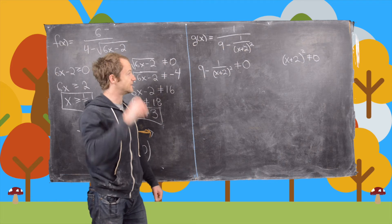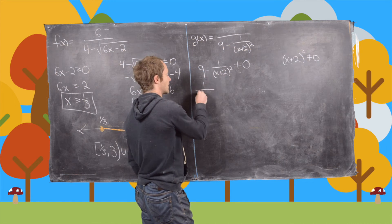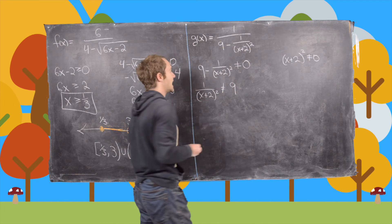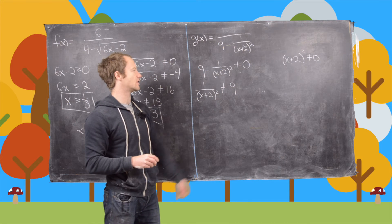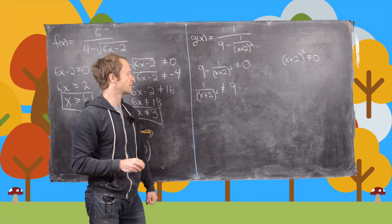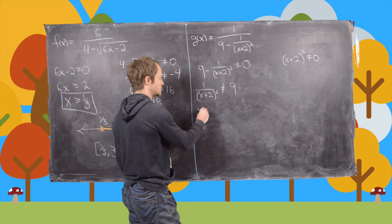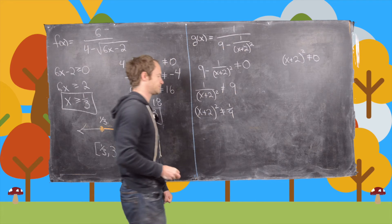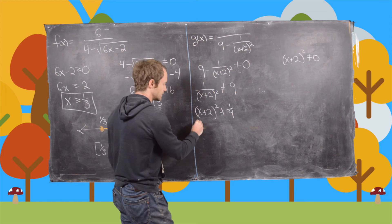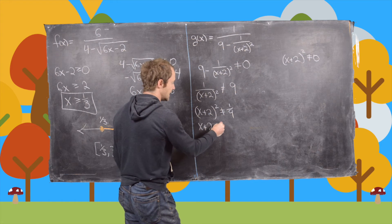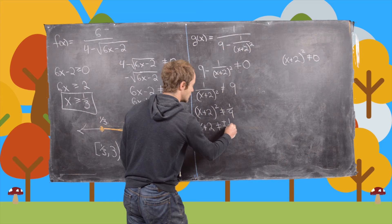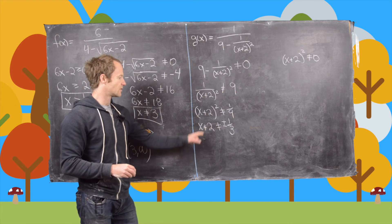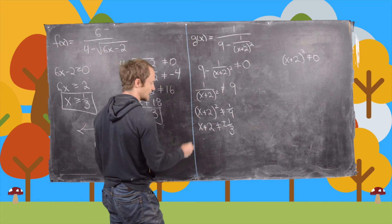Let's solve each of these conditions. For the first one, we get 1 over (x plus 2) squared is not equal to 9. Adding that term to both sides and then flipping both sides of the equation gives us (x plus 2) squared is not equal to 1 over 9. Taking the square root, we get x plus 2 is not equal to plus or minus 1 over 3, since the square root of 1 over 9 is 1 over 3.